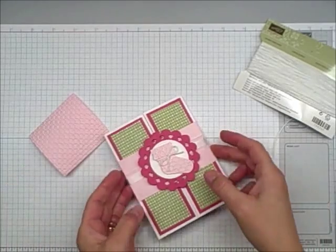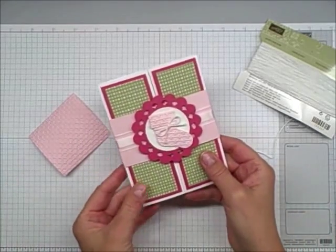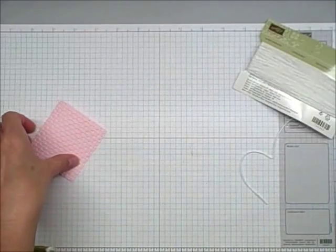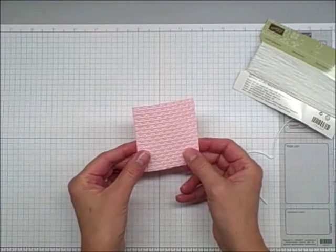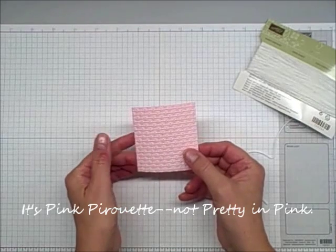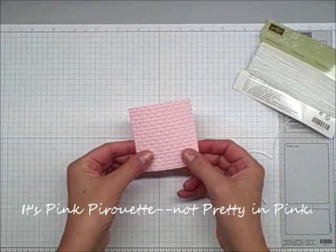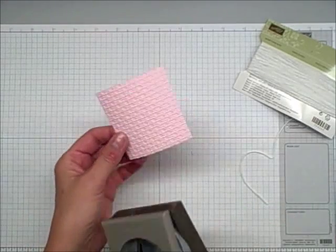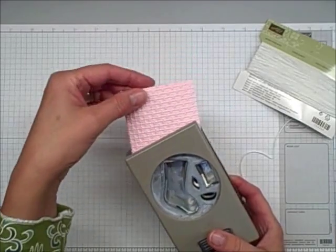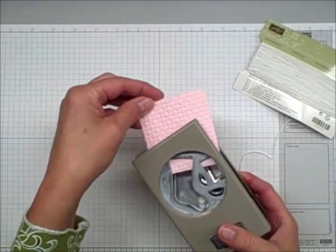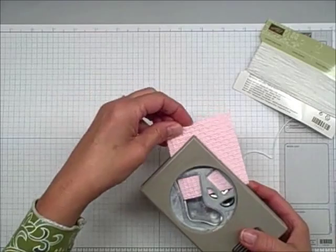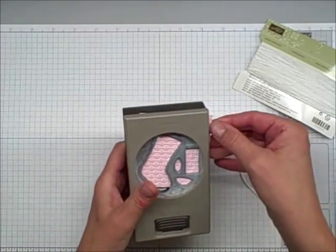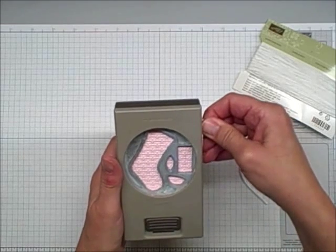Now we get to move on to my favorite part of this whole cute little announcement. And that's the Baby Bootie. I embossed a piece of Pretty in Pink cardstock using the Stampin' Up! Square Lattice Textured Impressions Embossing Folder. And then I'm going to use our new Stocking Builder Punch. Slide it in. There we go. Probably should have used a bigger piece. Okay. But I think we're good.